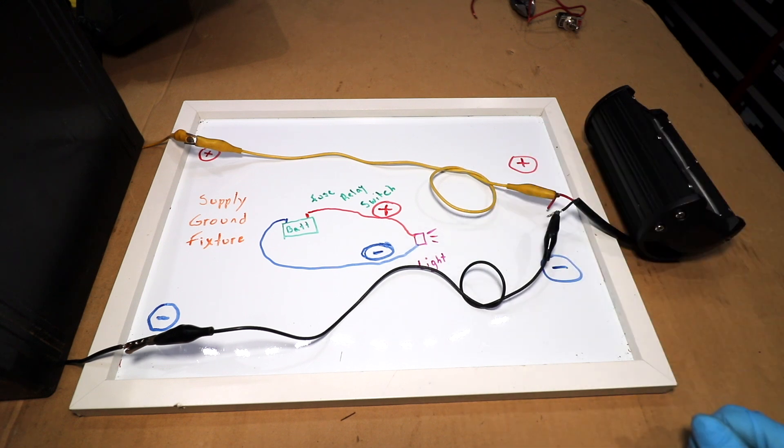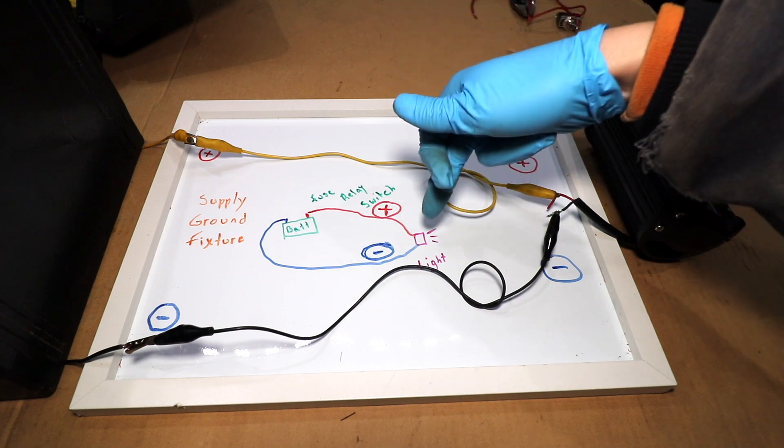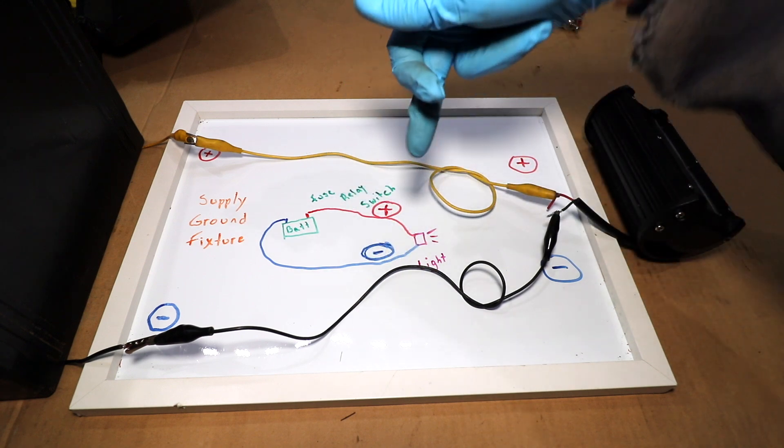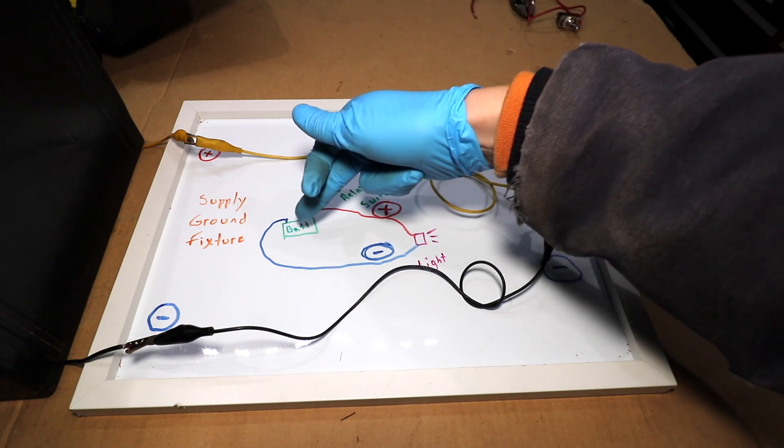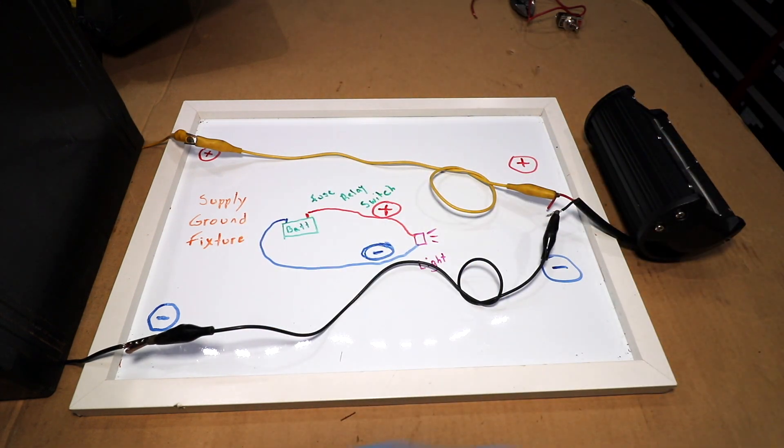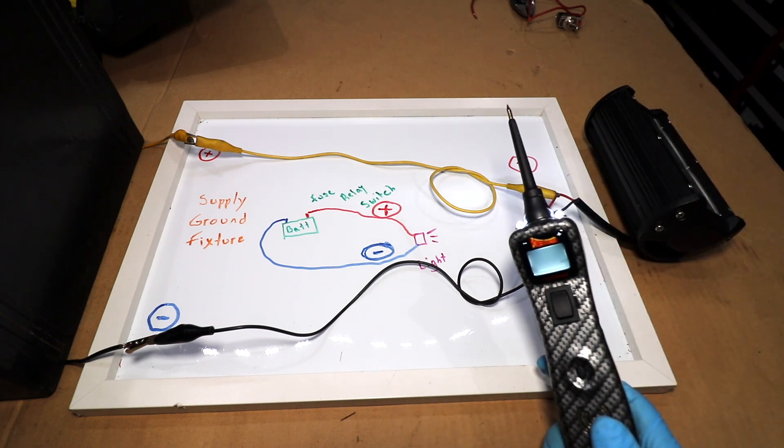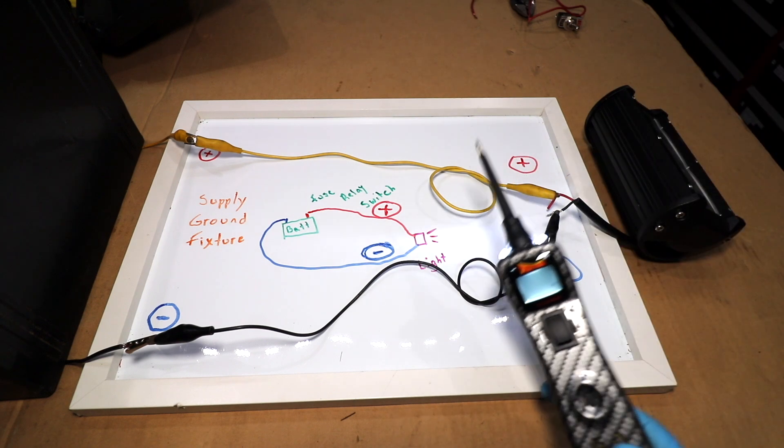When our component is not functioning properly, keep things pretty simple. It could usually be one of three things. We could have an issue with the supply going to the fixture. We could have an issue with the ground returning the power from the fixture back to the battery, or we could have an issue with the fixture itself. And a Power Probe makes it as painless as possible to troubleshoot and figure out where that issue may lie.